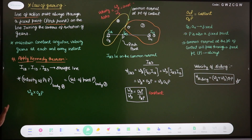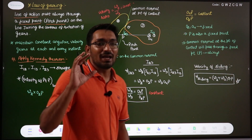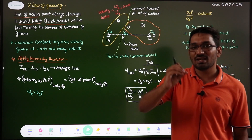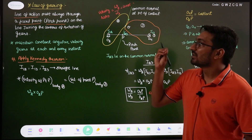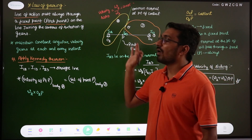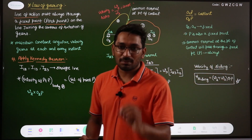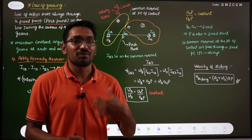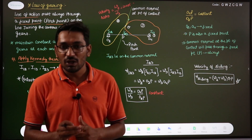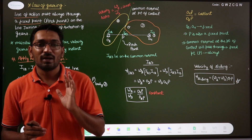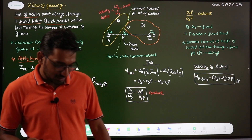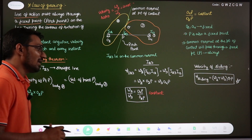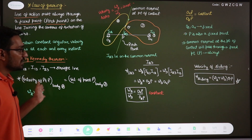This is all about the law of gearing. Any gear profile must satisfy this law at each and every point of contact. Profiles that satisfy the law of gearing are known as conjugate profiles. We have two conjugate profiles to discuss: the involute profile and the cycloid profile. Our main discussion will focus on the involute profile.